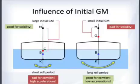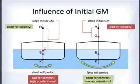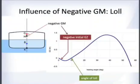Even though a small initial GM is bad for stability, it gives a long roll period, which is comfortable. A short roll period is bad for passenger comfort due to high accelerations and can cause cargo to topple. A long roll period means low accelerations, which is good for both passengers and cargo.